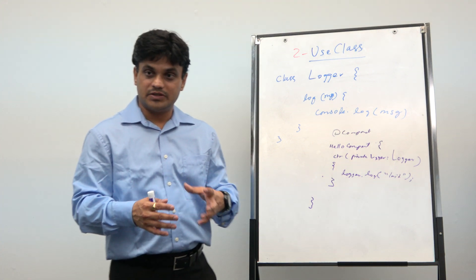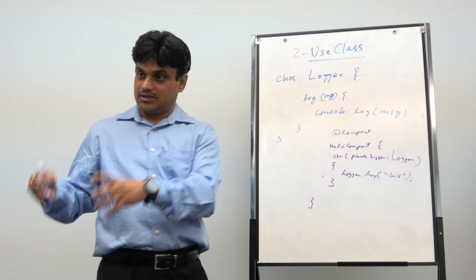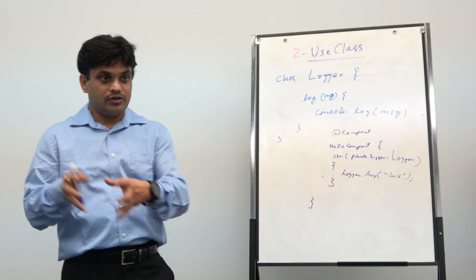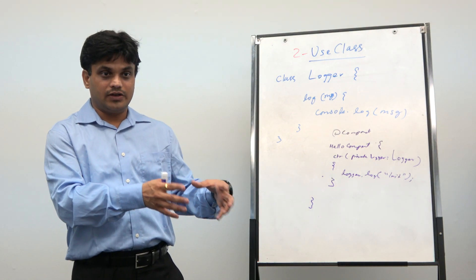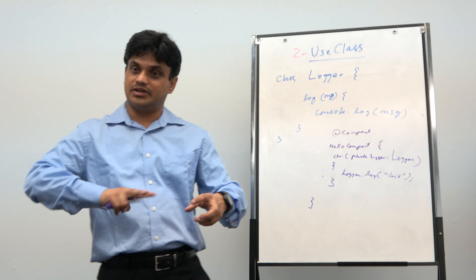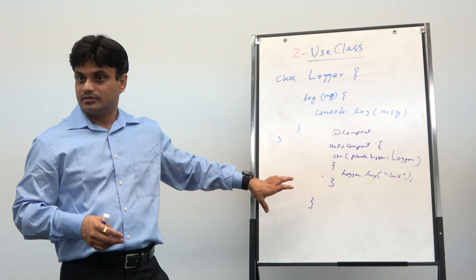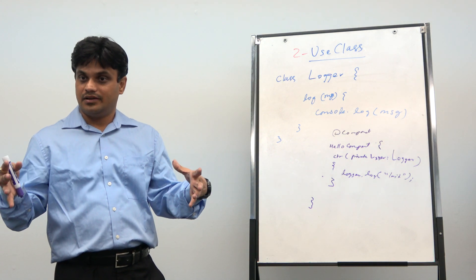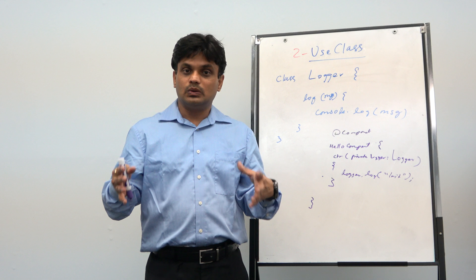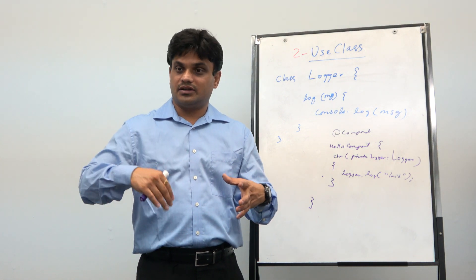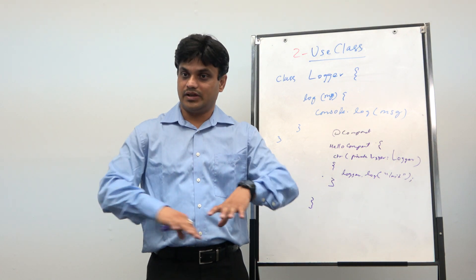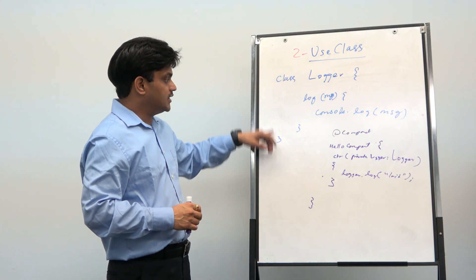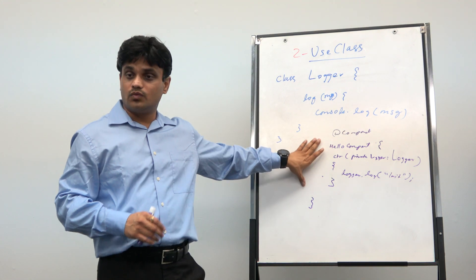In object-oriented principles, when behavior is changing we prefer polymorphism — create a separate class that inherits from the base class. Now you have two classes and you can switch between them at any time without changing any of the code base. That switching is done from the dependency injection side.